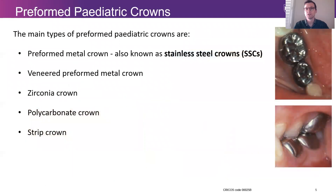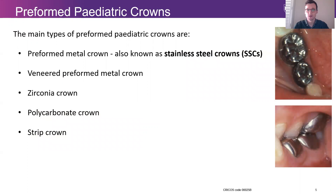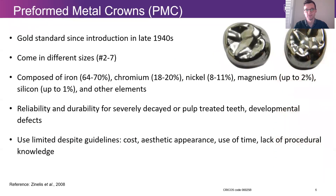The main types of preformed pediatric crowns are as follows: we have the preformed metal crown, also known as the stainless steel crown, a veneered version of this, the much newer zirconia crowns, polycarbonate crowns, and the composite resin strip crowns.